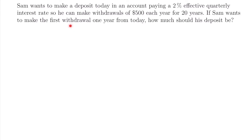Welcome back. Let's start with this example. Sam wants to make a deposit today in an account paying a 2% effective quarterly interest rate so he can make withdrawals of $500 each year for 20 years. If Sam wants to make the first withdrawal one year from today, how much should his deposit be?